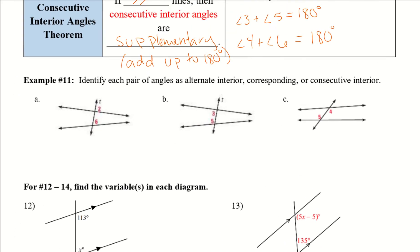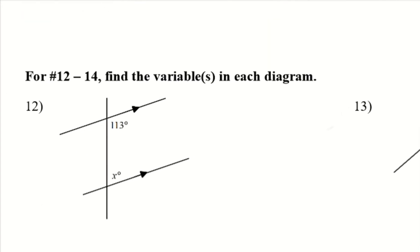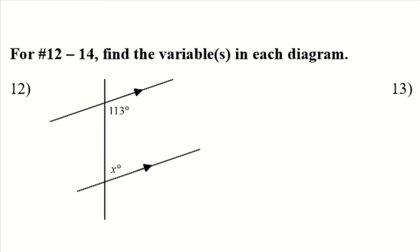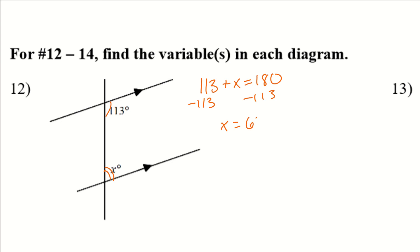Let's take a look at number 12. Since we have consecutive angles, I know they're not the same — that's why I added the extra line on the bottom one. But I do know they're supplementary. So 113 plus x equals 180; subtract 113, x equals 67.